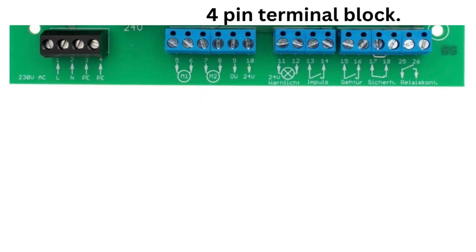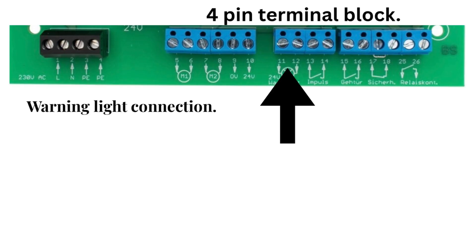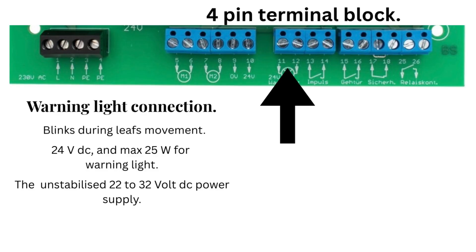4-pin terminal block. Terminal 11 and terminal 12. Warning light connection. Blinks during leaf's movement. Terminals 11 and 12 output plus 24 volt DC and max 25 watts for warning light. The unstabilized 22 to 32 volt DC power supply.